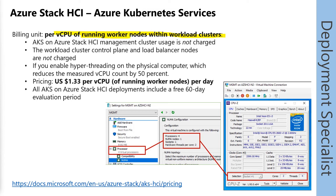We don't have to manually configure this running workload. When you start worker nodes, Azure will see these running workload nodes and you will be charged for them. And if you shut down the worker nodes, you will not be charged for them any longer. The pricing is $1.33 per vCPU of running worker nodes per day. We also have a 60-day evaluation period. Importantly, we are charged for virtual CPU based on the physical cores — this means if we use hyper-threading, we can optimize our costs by reducing them by up to 50%, because we have double the amount of threads available.